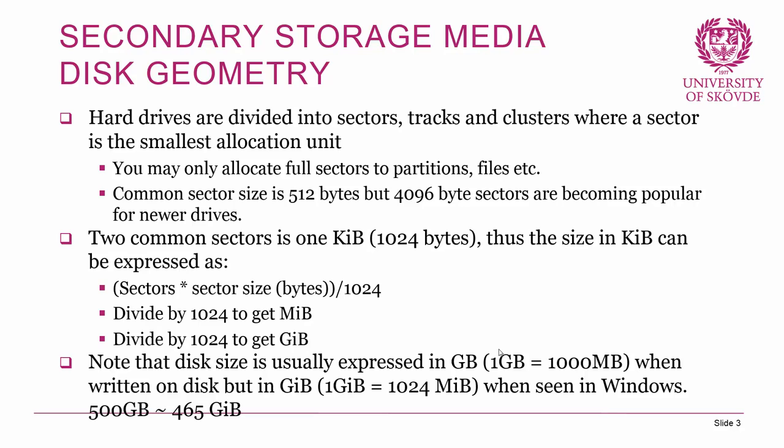In modern hard drives it's becoming more popular to have sector sizes of 4096 bytes. Since one sector is commonly 512 bytes, two sectors make up one kilobyte. The size in kilobytes can be expressed with the equation: sectors × sector size in bytes ÷ 1024 = kilobytes. Divide by 1024 again to get megabytes, and by 1024 again to get gigabytes, and so on.